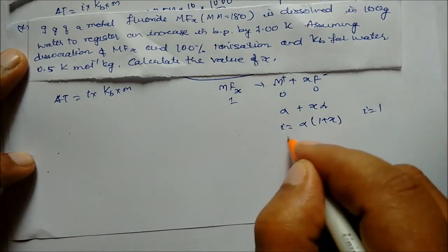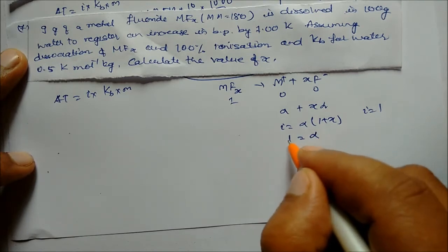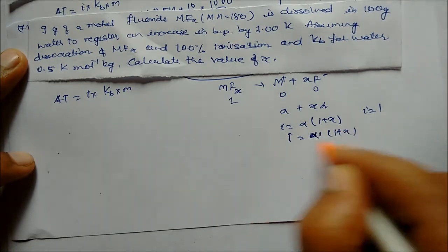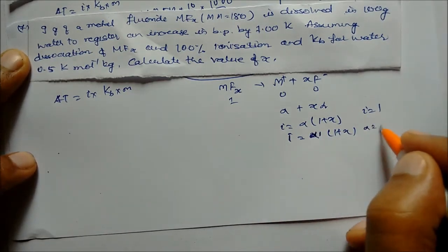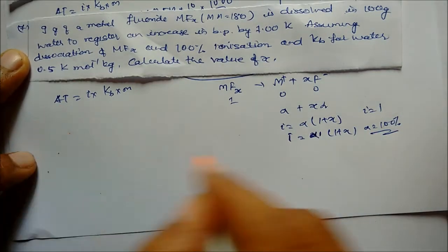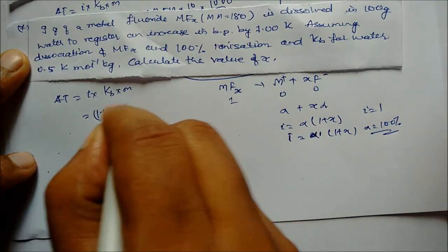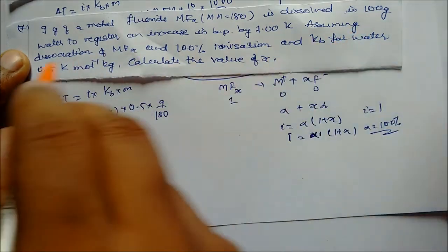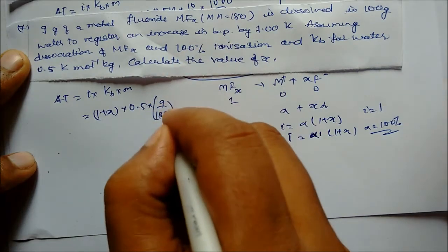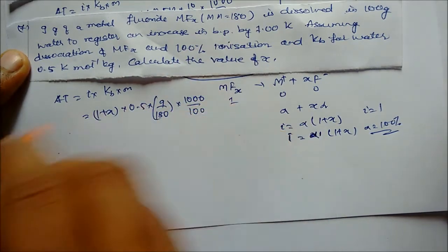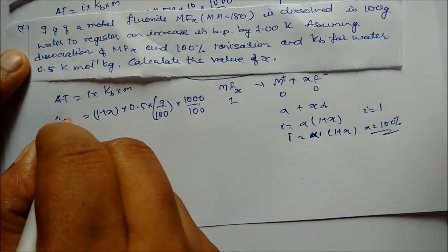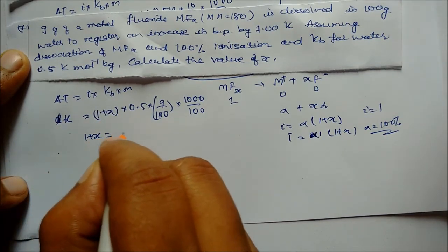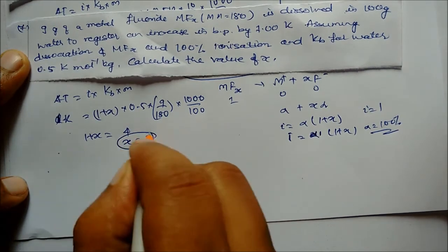Since alpha = 1 (100% ionization), i = 1 + x. Substituting: 1 = (1 + x) × 0.5 × (9/180) × (1000/100). Wait — given delta T = 1 Kelvin. Solving: 1 + x = 4, so x = 3. This is our answer.